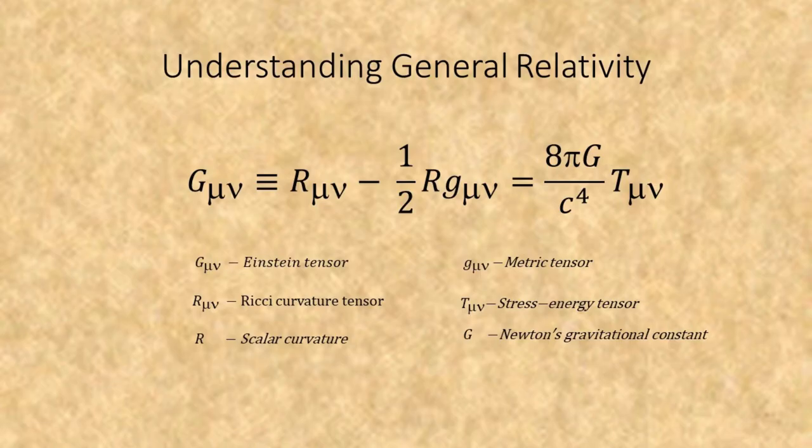This is Einstein's field equation for general relativity. It is an equation of tensors, and the one that we are interested in is the metric tensor. Feel free to pause the video before we take a closer look.